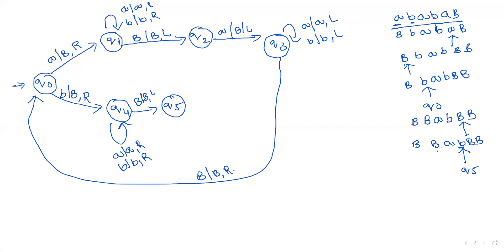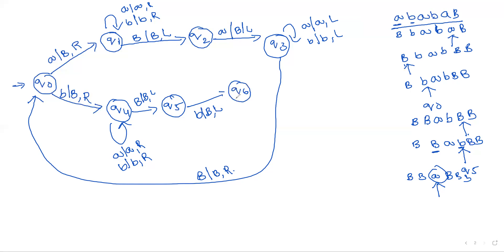At state q5, this is a palindrome — whatever symbol we get at the starting second position, we must also get the same symbol at the ending second position. If we are not getting the same symbol, it is not a palindrome. On q5, if receiving 'b' (blank): 'b' is replaced with blank and move to the left direction. We move to a new state q6.